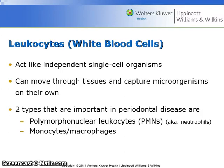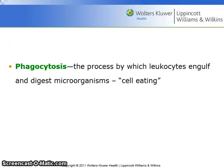Leukocytes are white blood cells which act as independent single-cell organisms that can move through tissues and capture microorganisms on their own. Two types of leukocytes that are important in periodontal disease are polymorphonuclear leukocytes, also known as PMNs and neutrophils, and monocytes/macrophages. Phagocytosis is the process whereby the leukocytes engulf and digest microorganisms — this is known as cell eating.